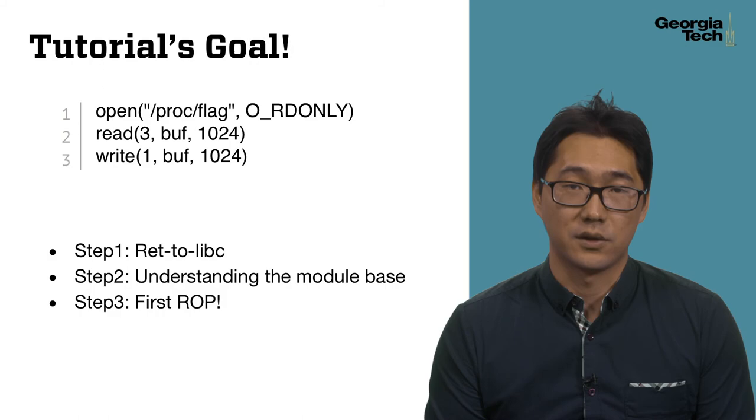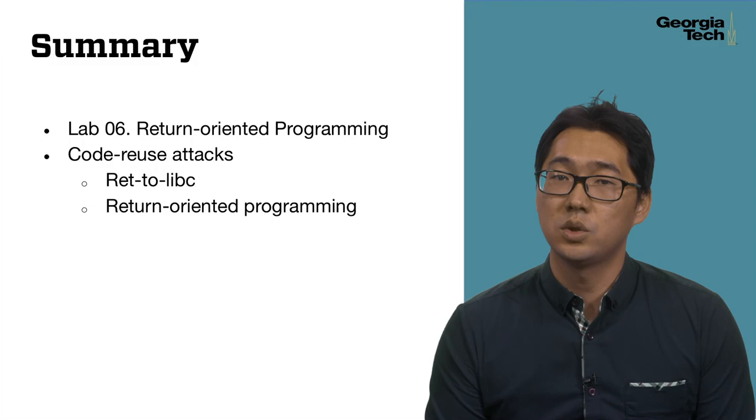Today's task is to construct a raw payload that chains three functions: open, read, and write. With this payload, you can read the flag file and leak the flag to the console.